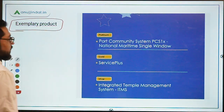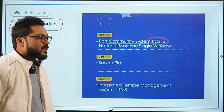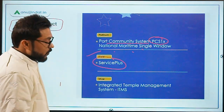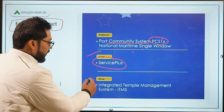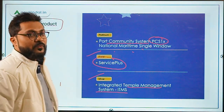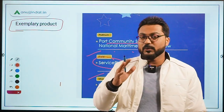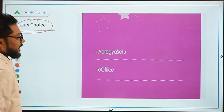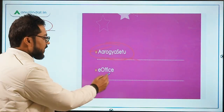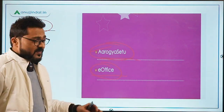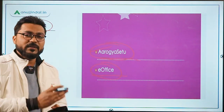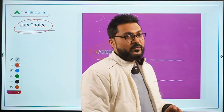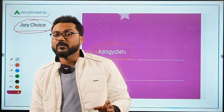For Exemplary Products: Platinum went to PORT Community System PCS1X, a National Maritime Single Window accessible by everyone. Gold went to Service Plus. Silver went to the Integrated Temple Management Service, through which devotees can access all information related to a temple. Under Jury Choice: Aarogya Setu and E-Office, a portal through which all government offices' addresses, locations, and contact numbers can be accessed.